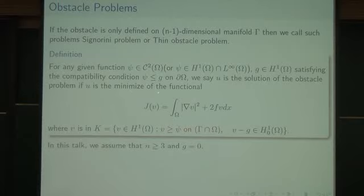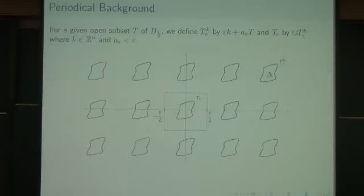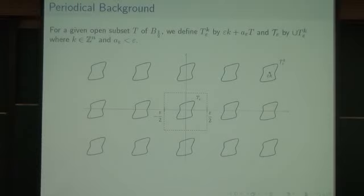Here is the formal definition of the thin obstacle problem. The only difference is that the obstacle is defined on gamma — that is the only difference. I assume the dimension is greater than or equal to 3, and for simplicity I will assume the boundary condition is zero. Let me introduce the periodical background.